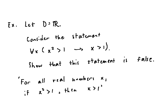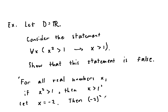Now to show that this statement is false, all we need to do is find one real number x such that x² > 1 but x is not greater than 1. Let x = -2. Then (-2)² = 4, which is greater than 1. But -2 is not greater than 1. So we found a real number x such that x² > 1 but x is not greater than 1. So this statement is false.